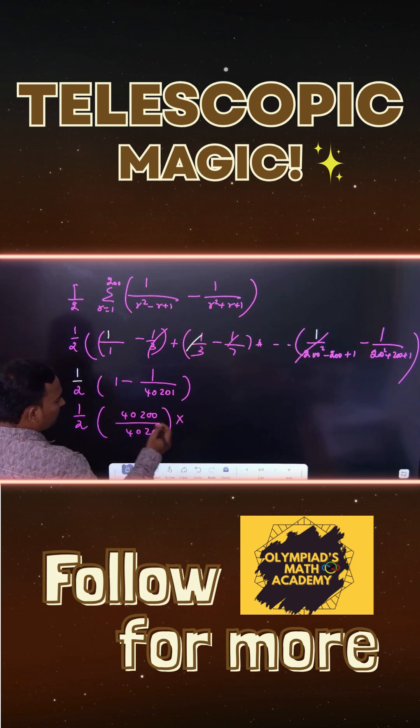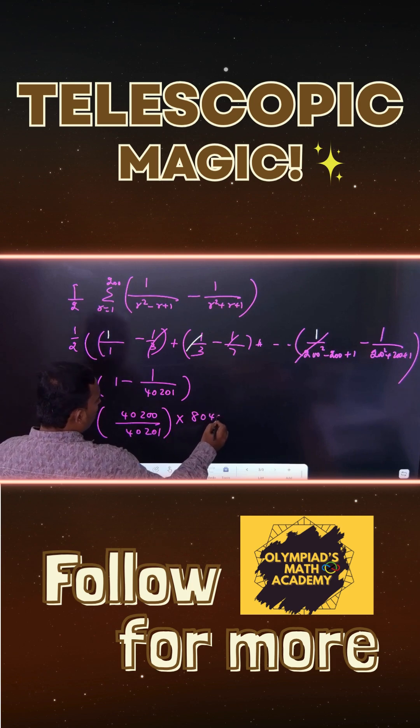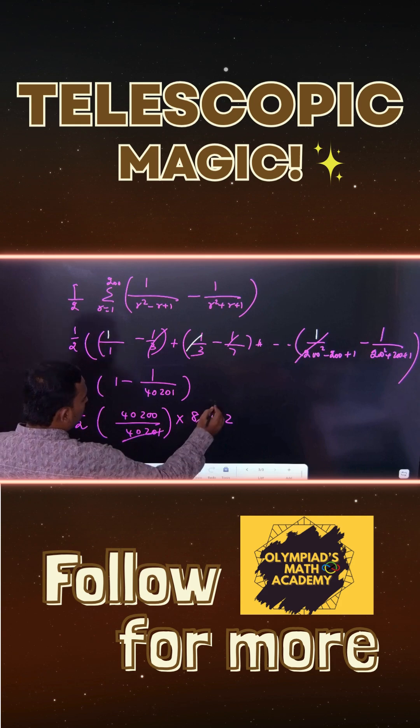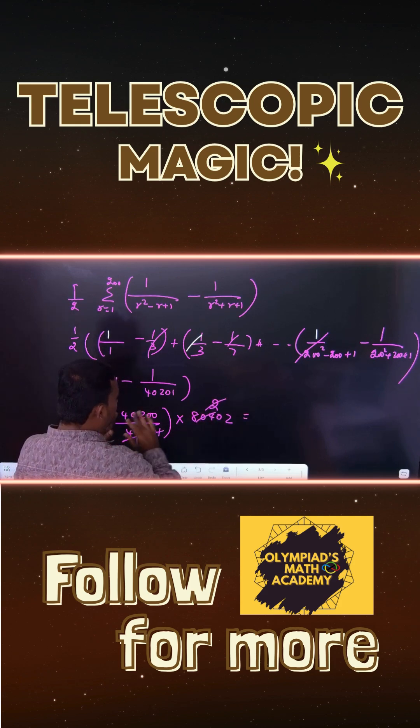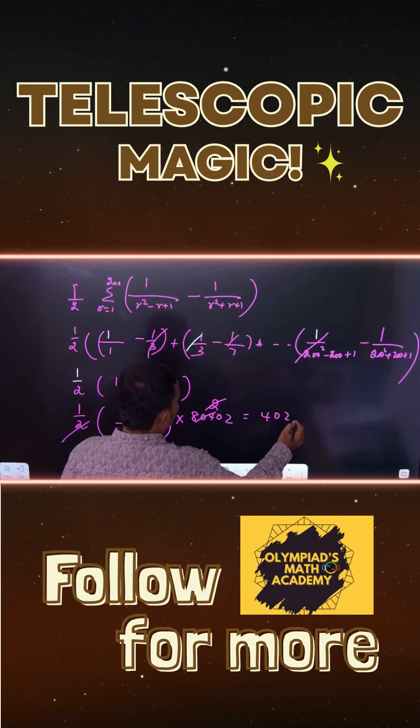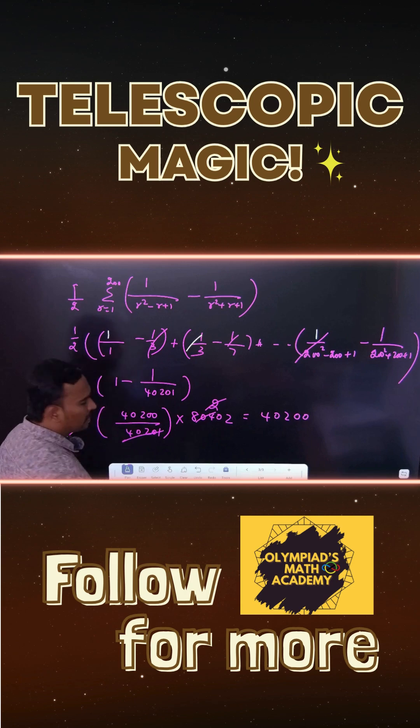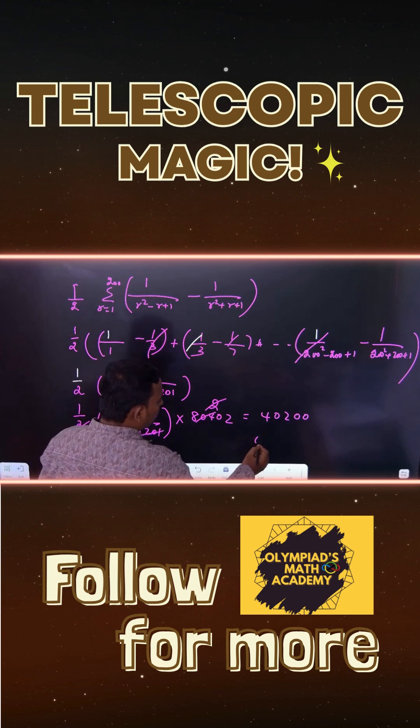You have to multiply with 1 by 2. 1 times here, 2 times will get, this 2 cancels. The whole expression will be 40,200. Sum of the digits they are asking, the sum will be 6.